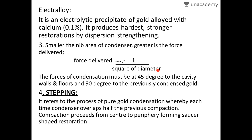The forces of condensation must be at 45 degrees to the cavity walls and floors, and 90 degrees to the previously condensed gold. During compaction, condensation forces should be angled at 45 degrees to the walls and floors, and 90 degrees to the previously condensed layer.